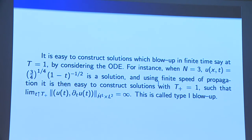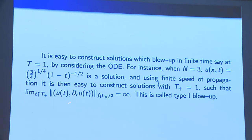One could say this explicit blowing-up solution is not in the energy space — and indeed it is not. But for wave equations we have finite speed of propagation, so if you truncate that solution at time zero in a box of radius 2, then at time 1 in the box of radius 1 it is exactly equal to that solution. Therefore you have finite energy solutions whose norm tends to infinity in finite time. This is what one calls a type one blow-up.